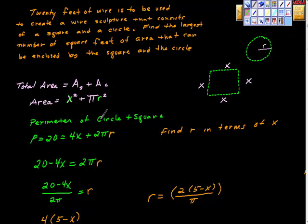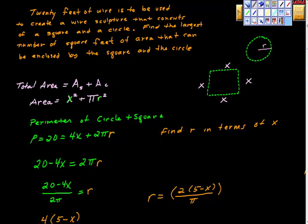However, if we go to the perimeter - because we're going to have to put wire all the way around these shapes - the perimeter is 20. So 20 equals 4x, since x + x + x + x is 4x, and the perimeter of a circle is 2πr. Given that, we're going to find r in terms of x, and then plug that r into the area function to get everything in terms of x.